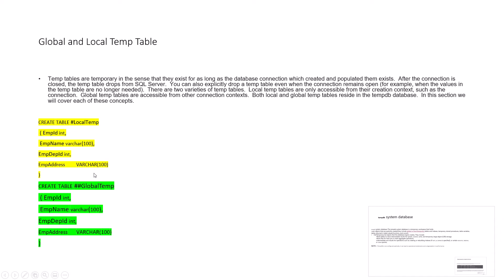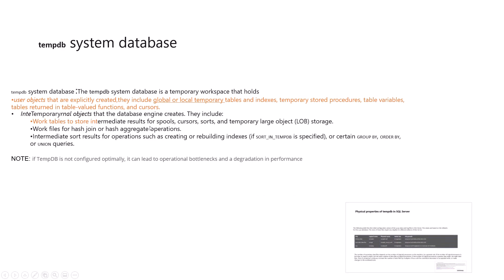Global temporary tables exist until the SQL Server connection exists, and after the connection is closed these temporary tables are dropped from the system, though they can also be dropped manually. The database engine also uses tempdb for cursors, sorting in queries, LOB data types, and hash and aggregation operations. When rebuilding indexes, tempdb is also used.